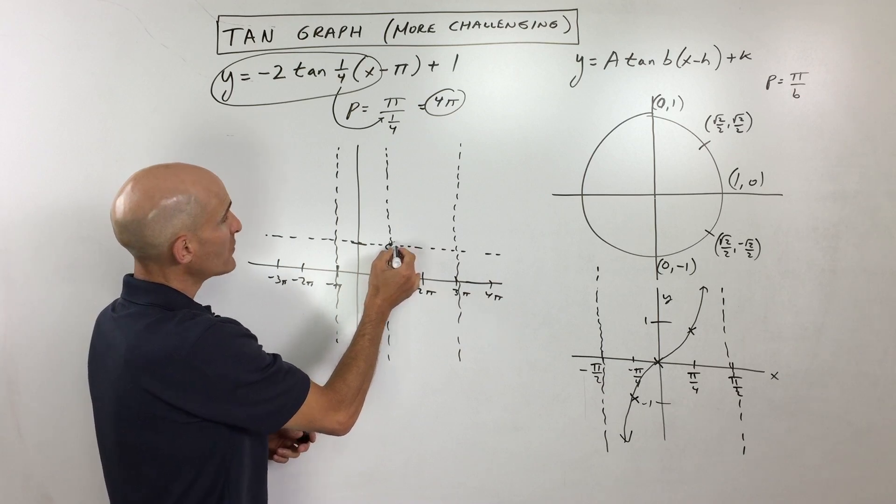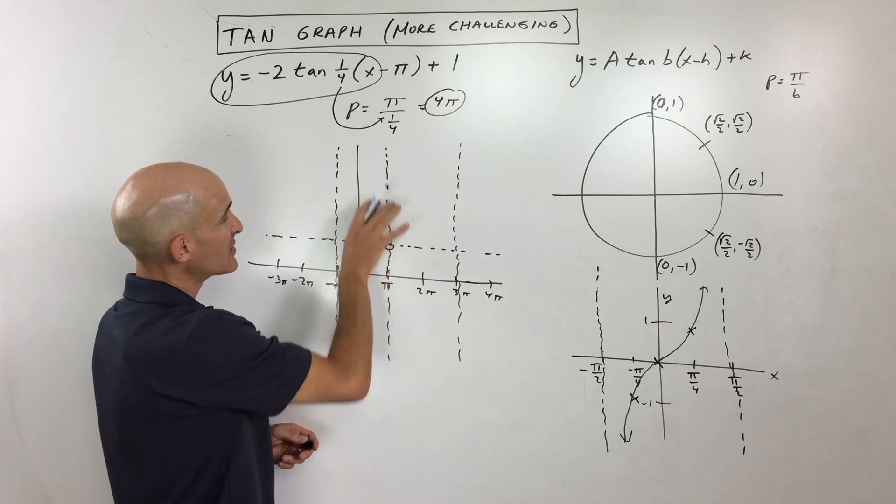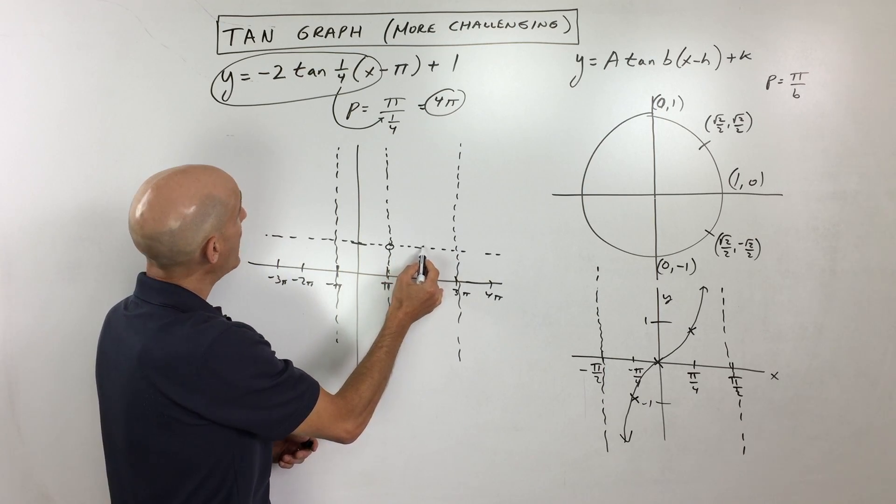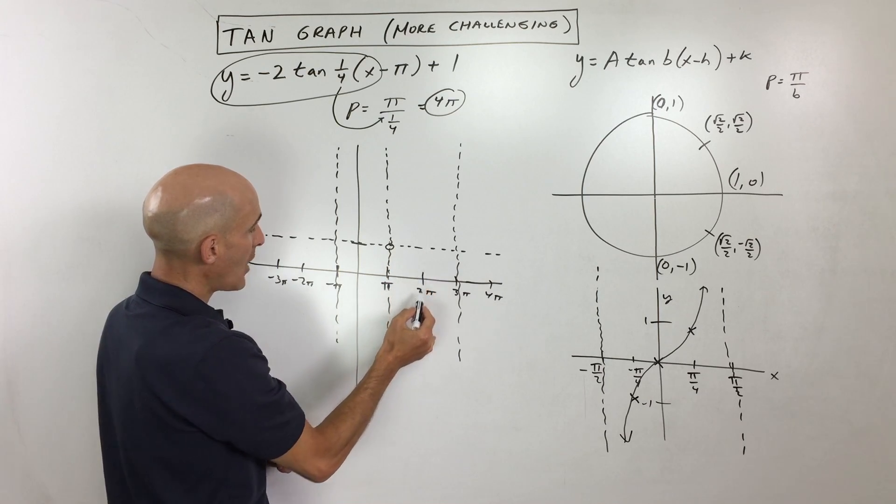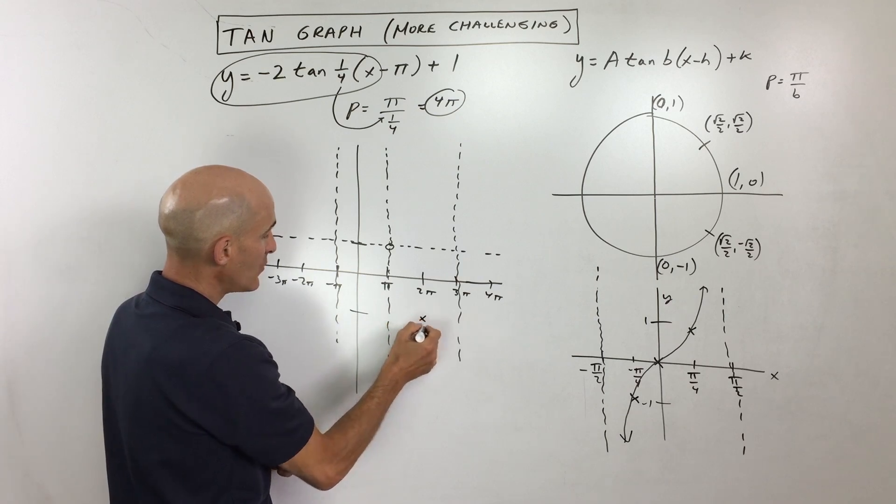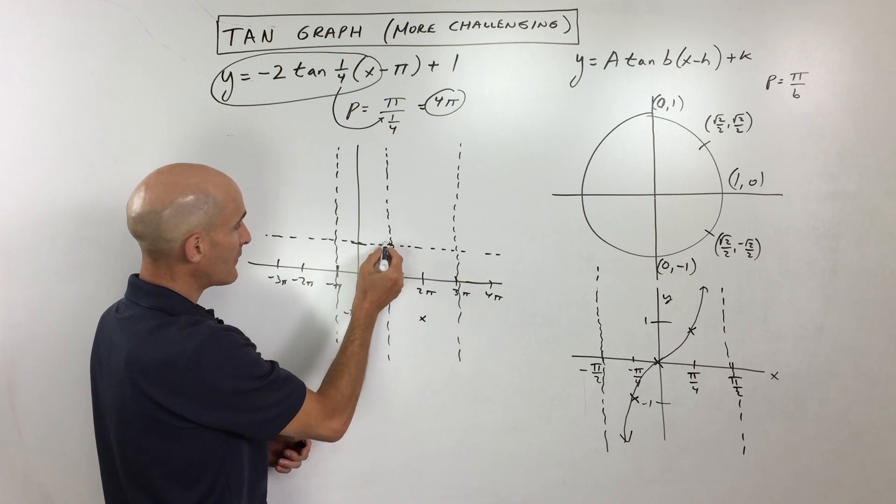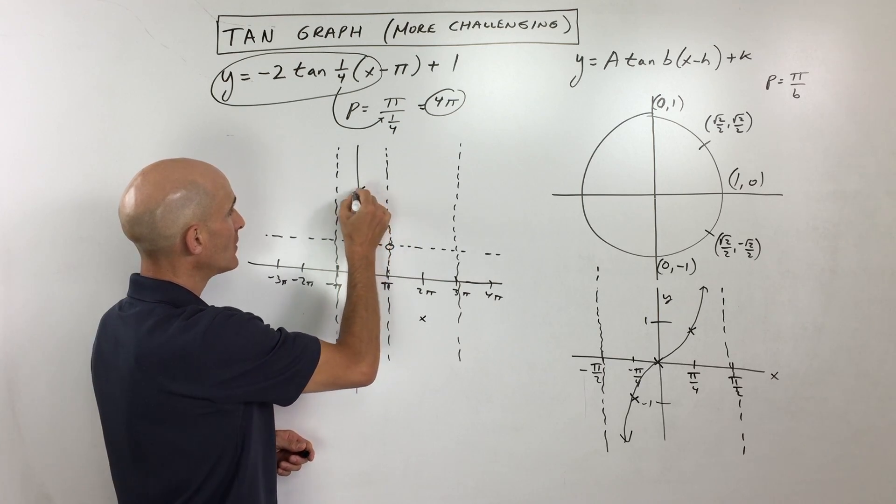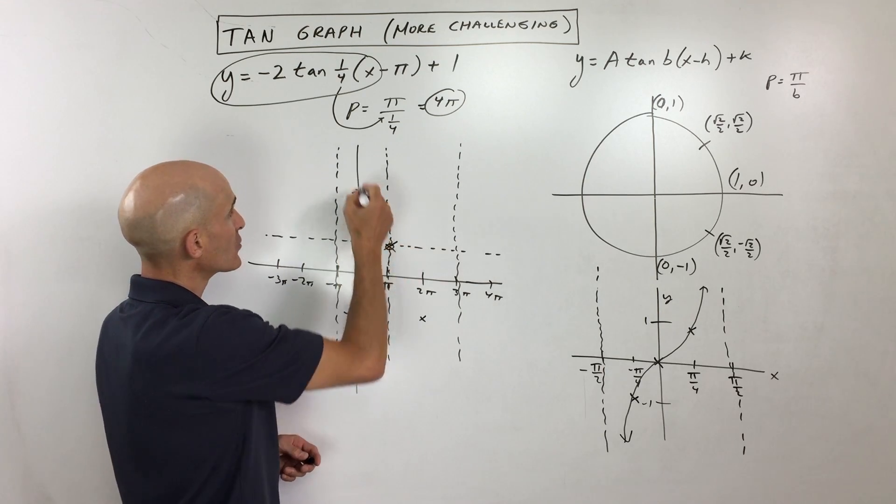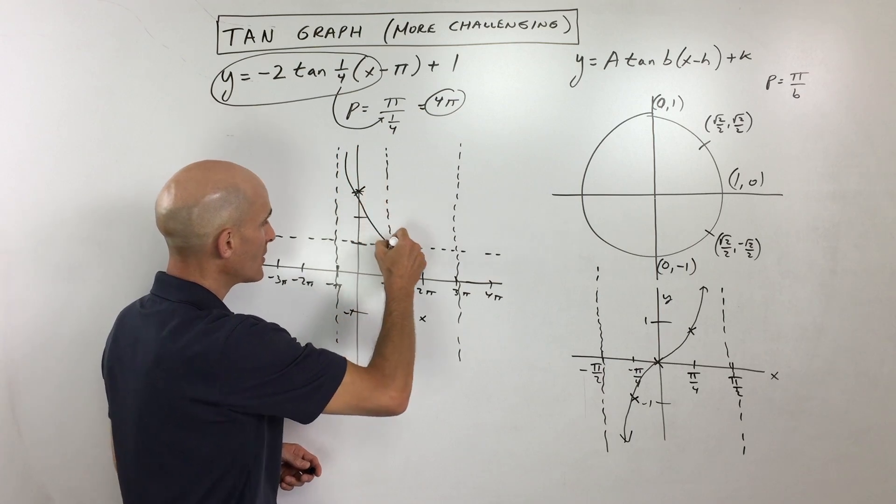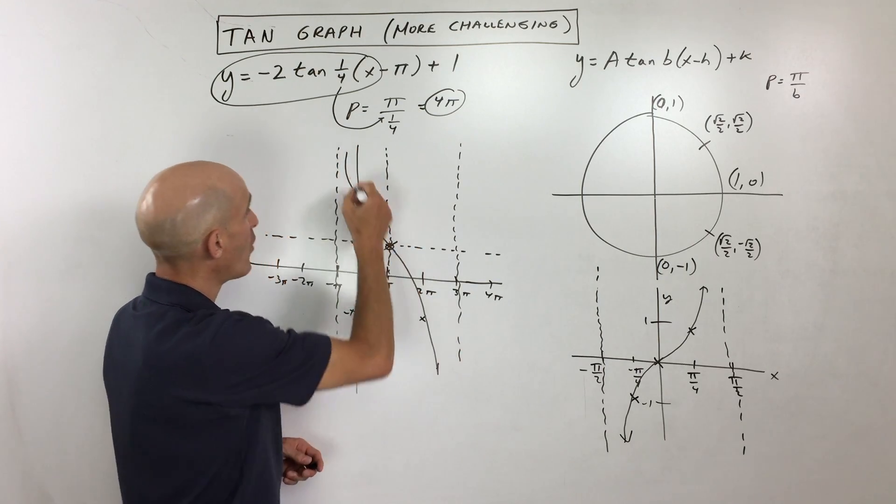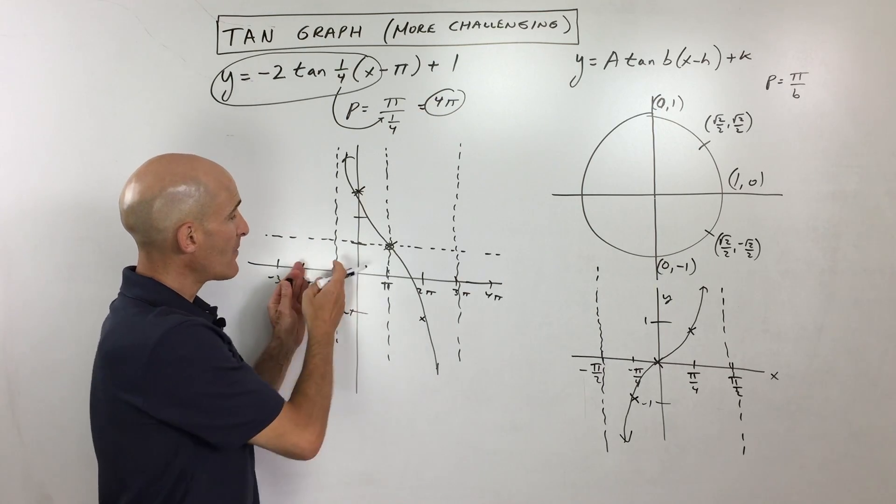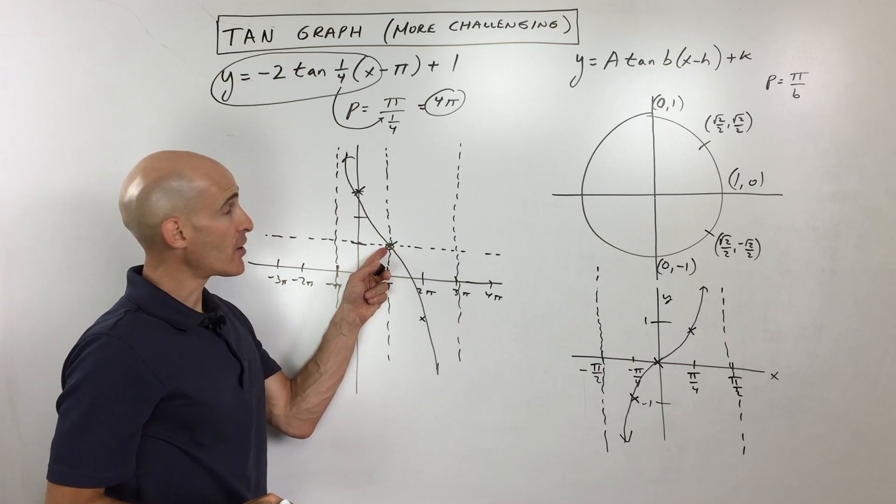And then what we can do now is normally the graph would go up to the right, but because it's reflecting, it's going to go down to the right. So by going right 1, I'm going to go down 2, and so that's going to be one of our key points here. And then if I go left 1, I'm going to go up 2, and then if we go right here, 0, 0. So basically that's one period, that's one cycle of our graph. So that's an easier way to work with it, is think about shifting that origin, that starting point.